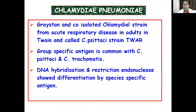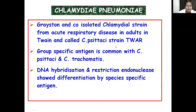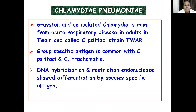The next important human-infecting Chlamydia is Chlamydia pneumoniae. Grayston and colleagues isolated the Chlamydia strain from respiratory disease in adults in Taiwan; this is called Chlamydia psittaci strain TWAR. It possesses the group-specific antigen common with both Chlamydia psittaci and Chlamydia trachomatis. DNA hybridization and restriction endonuclease analysis showed differentiation only with species-specific antigen.